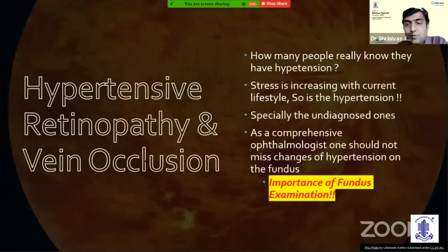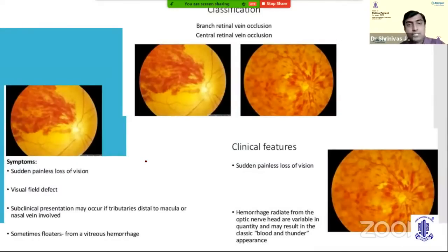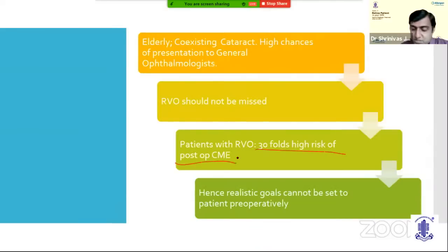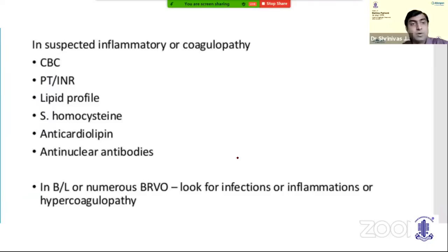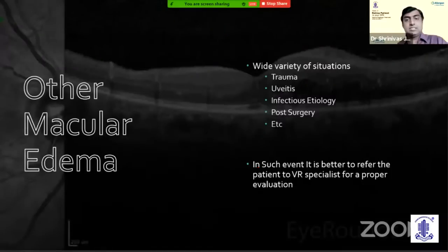Coming to hypertensive retinopathy: stress and hypertension are increasing with current lifestyle. Retinal vein occlusions are classified as central, branch, and hemicentral — each subdivided into non-ischemic and ischemic. The blood-and-thunder appearance is typical of ischemic CRVO. Patients with RVO have a 30-fold higher risk of post-operative CME after cataract surgery. Detailed workup should include CBC, homocysteine, and anti-cardiolipin. General guidelines: treat intraocular neovascularization with PRP, treat visually significant macular edema with intravitreal injections or steroids, manage IOP if needed, and treat the underlying medical condition.